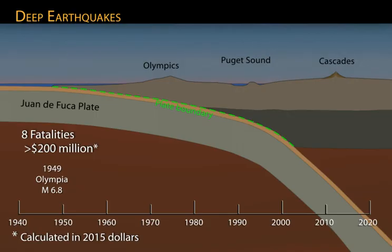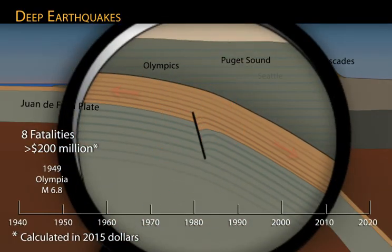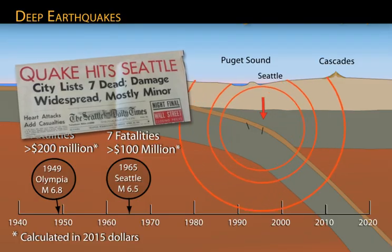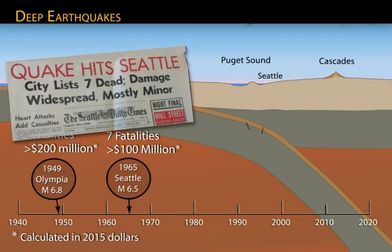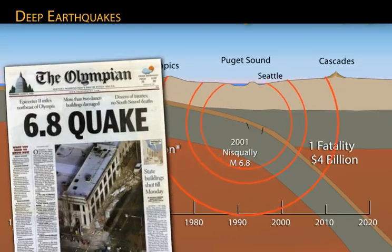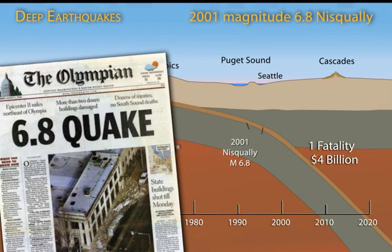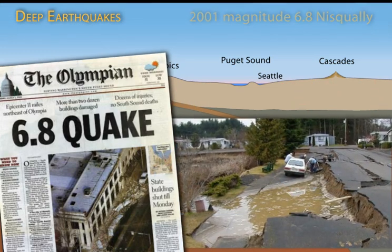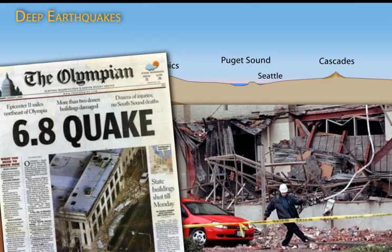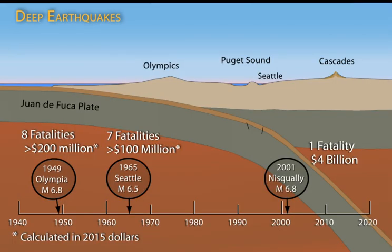As the subducting plate bends beneath Puget Sound, the upper part stretches under tension and fractures in normal faults. In 1965, a magnitude 6.5 deep earthquake occurred 60 kilometers below Seattle, killing 7 people and causing 100 million dollars in damage. The 2001 magnitude 6.8 Nisqually earthquake was identical to the Olympia earthquake and may have occurred on the same normal fault. Strong ground shaking in the Puget Sound basin lasted over 30 seconds and caused one death, 400 injuries, and damaged 40 bridges and 300,000 buildings. Deep earthquakes occur every 20 to 30 years beneath the Puget Sound and can occur along the length of Cascadia where the subducting plate bends to dive more steeply.